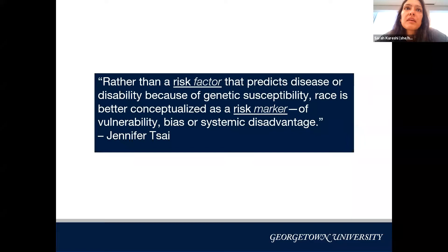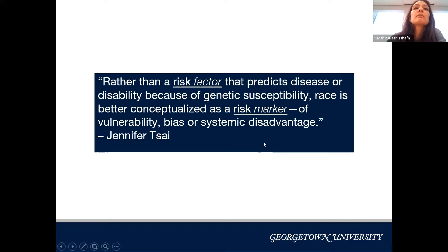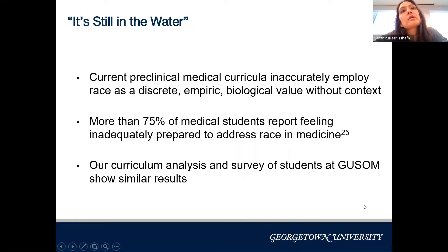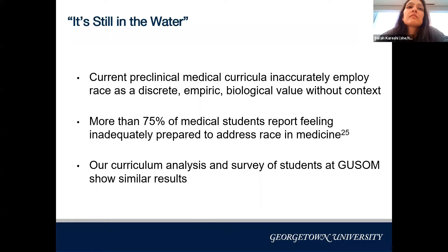Rather than using race as a risk factor predicting disease because of something genetic, race should be conceptualized as a risk marker of vulnerability, bias, or systemic disadvantage. We should absolutely use race — given the racial inequities in our country — but reframe how we think about it. The problem is it's still in the water: current pre-clinical medical education inaccurately employs race as a biological value, and more than 75 percent of medical students feel inadequately prepared to address race in medicine.